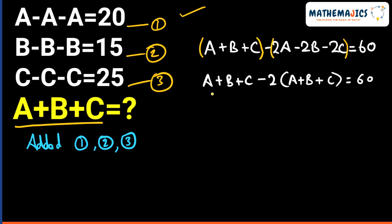Now you can clearly see that A plus B plus C is common to both the groups. So let's take A plus B plus C common from both the groups. We will get A plus B plus C common and we will be left with 1 minus 2 is equal to 60.